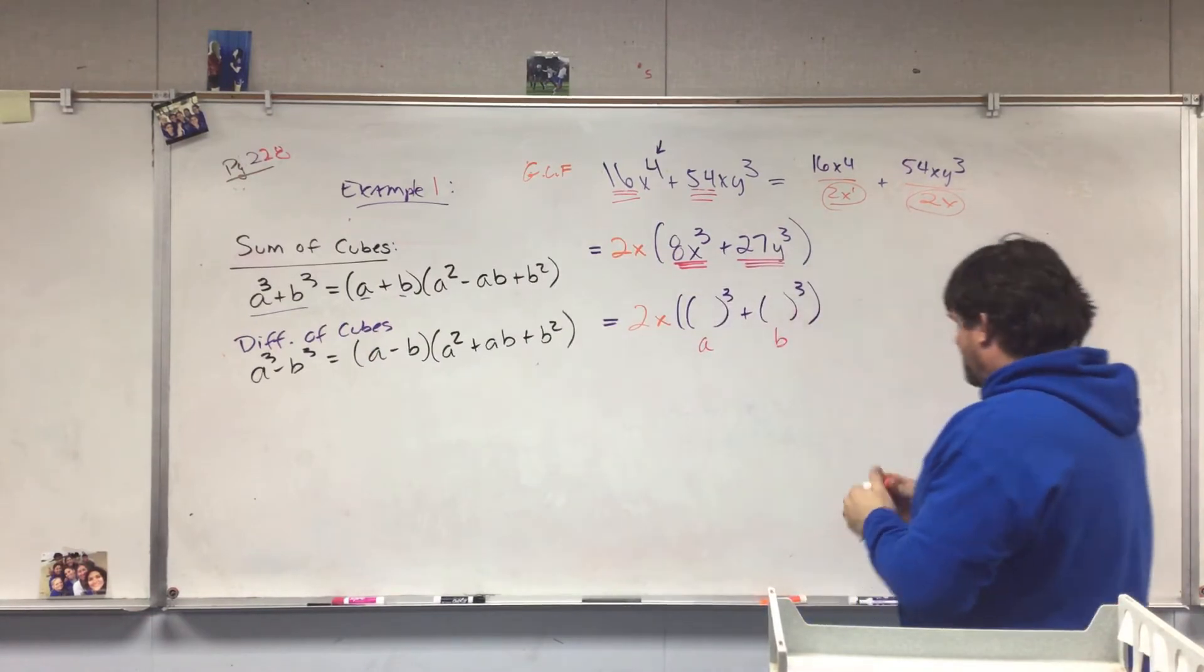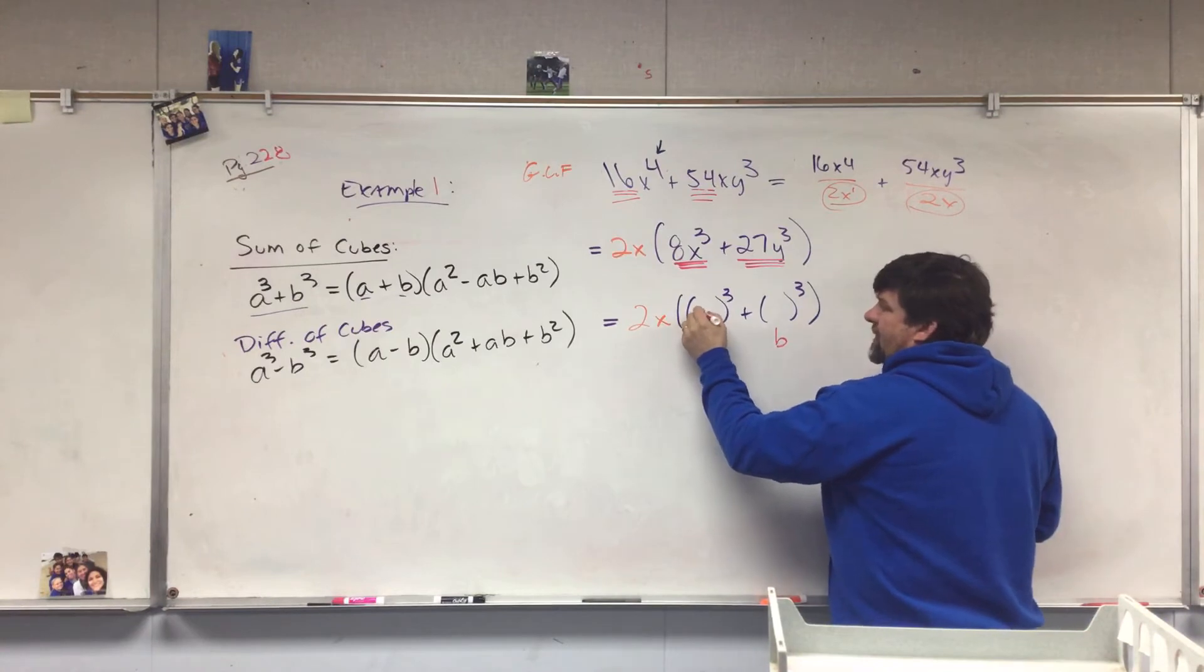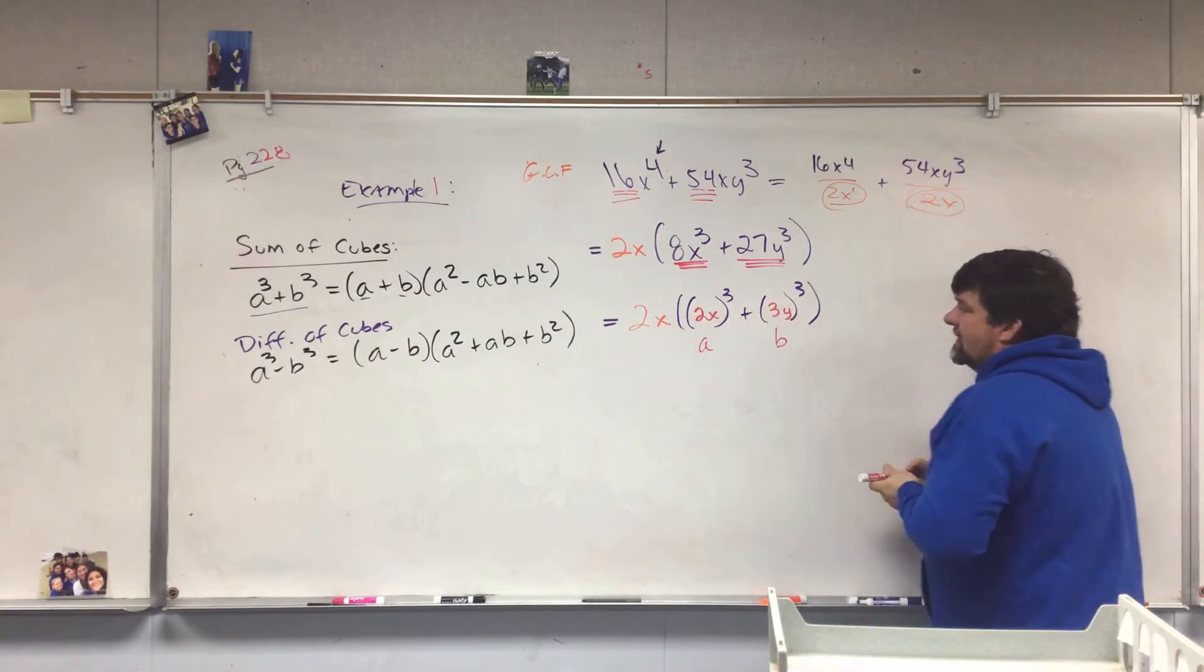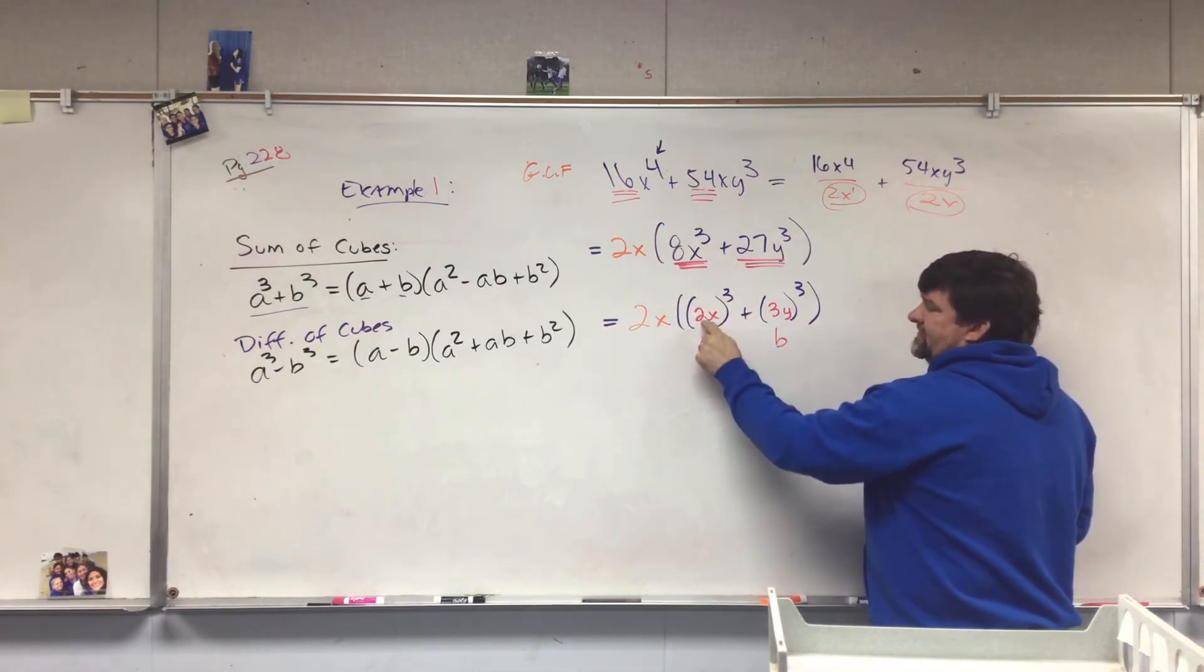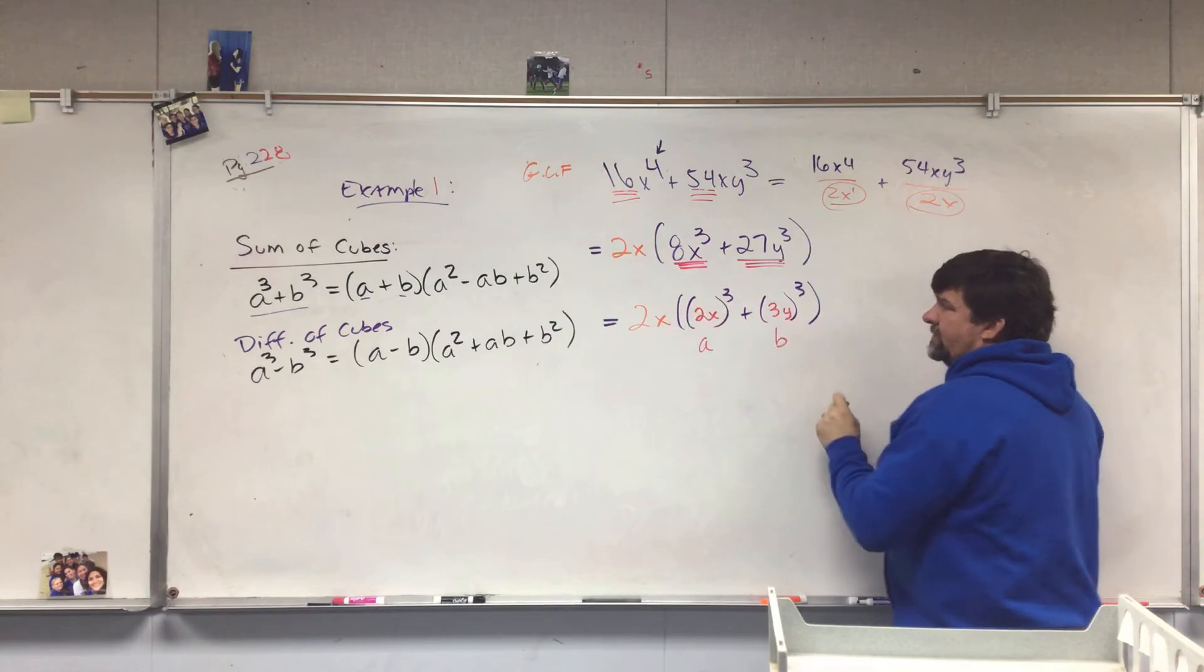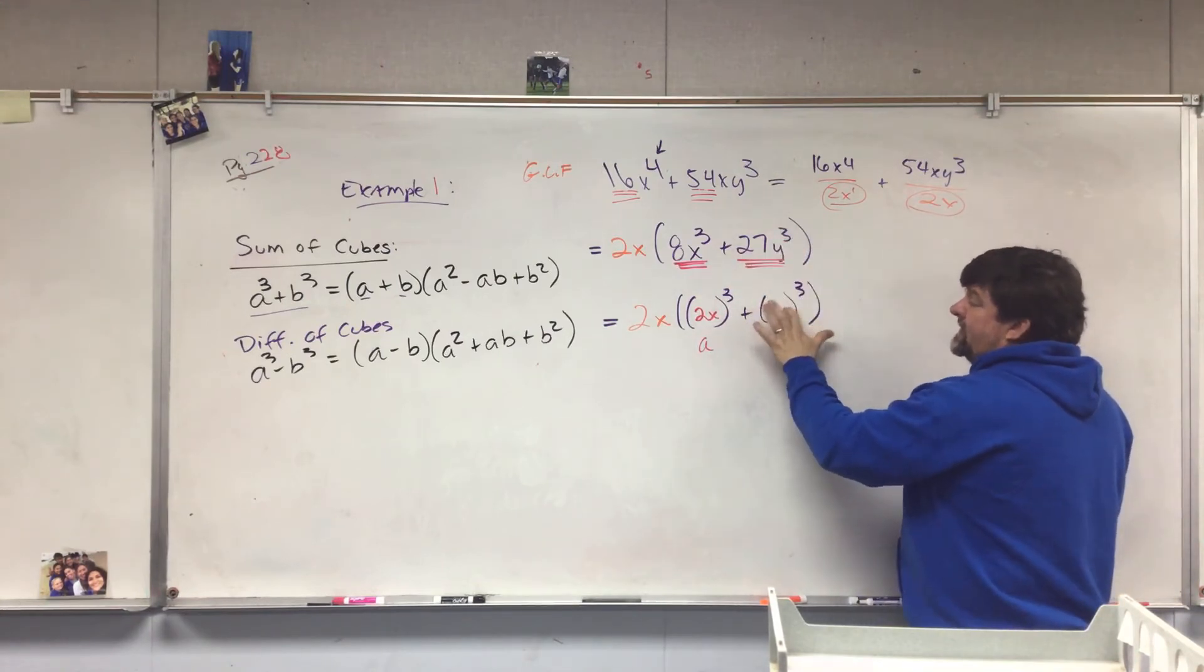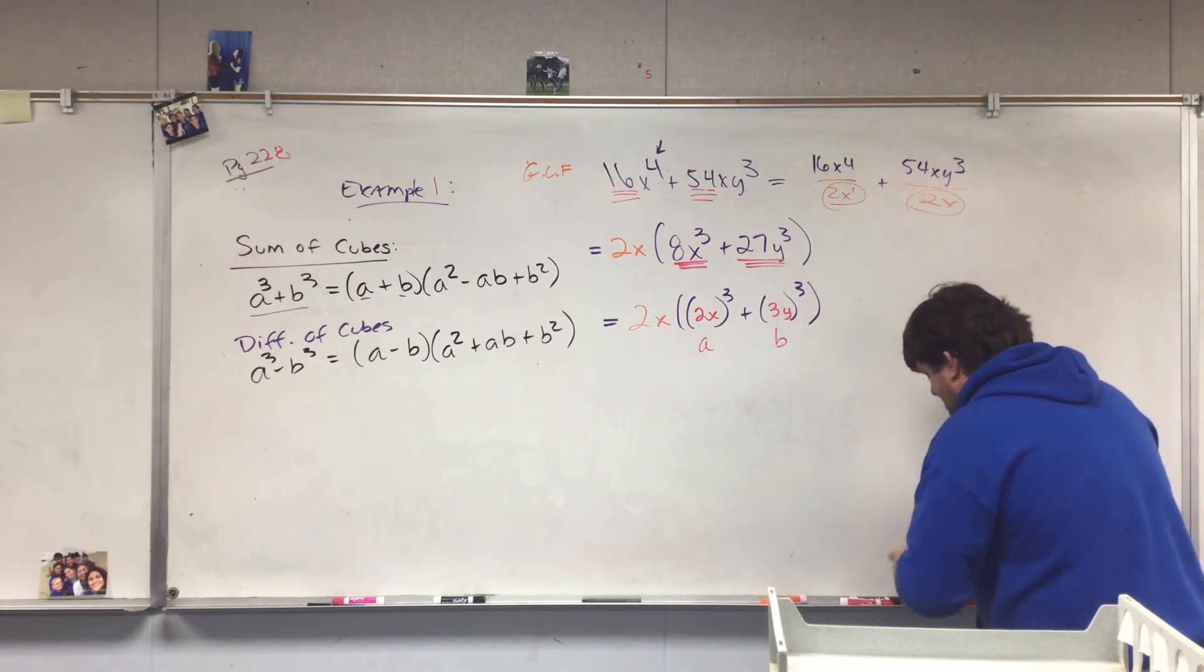So I'm gonna write the two different ones in here. We're gonna get (2X) and we're gonna get (3Y). So in your mind go, well how did he go from 8X³ to (2X)³? How did he go from 27Y³ to (3Y)³?